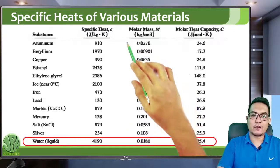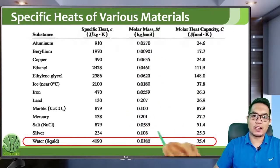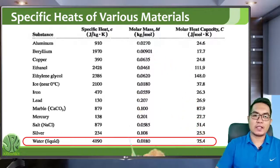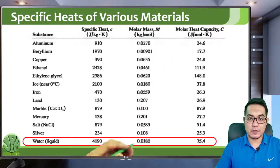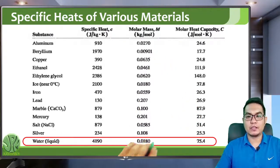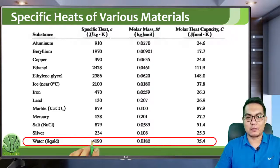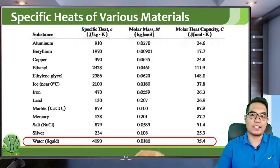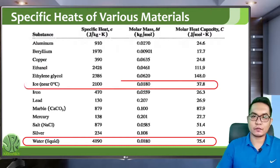In the second column is the molar mass in kilograms per mole, and then the molar heat capacity — the big C. The small c is the specific heat, and the big C is the molar heat capacity.